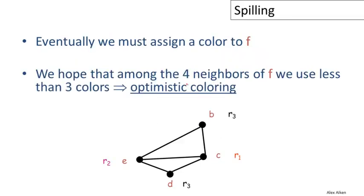After we decide to spill F and we successfully color the subgraph, now we have to try to assign a color to F. We could get lucky and discover that even though F had three or more neighbors when we removed it from the graph, when we construct the coloring for the subgraph, those neighbors actually don't use all of the registers.